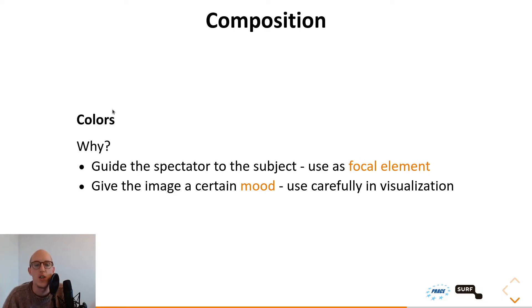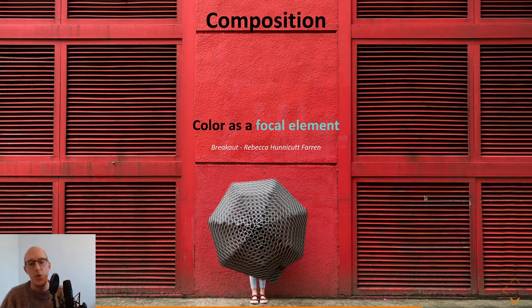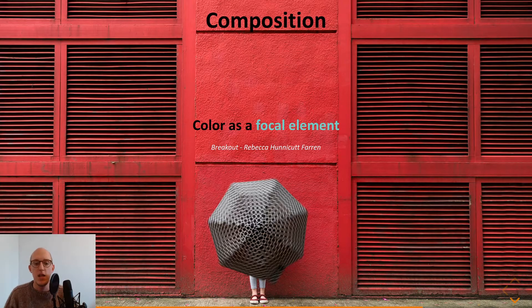And next we have colors. You can use colors for composition as well. Why, you would ask? Well, you can guide your spectator towards a certain subject. Use it as a focal element or as a guiding line. You can give your image a certain mood, which sometimes you don't want to use within visualization because you don't want to be suggestive. You want to be as neutral as possible when it comes to visualization, but sometimes when you want to dramatize your image, you can create a certain mood to your visualization with colors as well. And here is an example of color as a focal element. You have a completely red background with a grey umbrella, which immediately your eye will guide yourself towards the grey spinning umbrella. That way you can immediately go to the focal element.